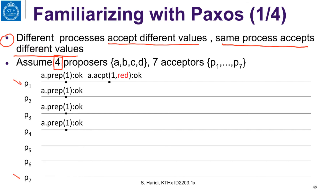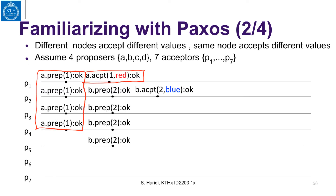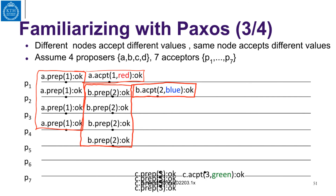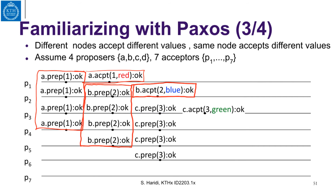Proposer A does a prepare phase on four processes at round number 1, then starts the accept phase, and acceptor P1 gets the red value and accepts it. Proposal B sends a prepare at round 2, which is accepted by four acceptors, and then starts its accept phase — acceptor P2 accepts the blue value. So we now have P1 accepting red and P2 accepting blue. Continuing the same pattern, P3 accepts the green value.